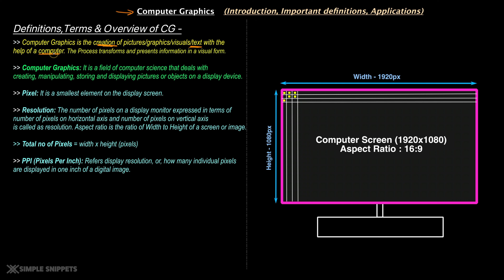This is a very layman definition. By the way, if you guys are making notes, you can take these down and use them in your exams as well. I've made them in a concise way so you can put them in your theoretical answers. So basically, computer graphics is the process that transforms and presents information in a visual form.